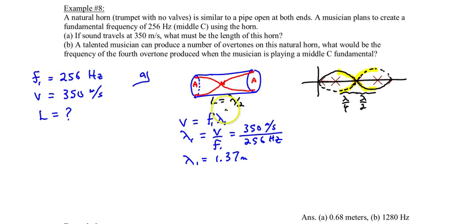And the next thing is we know that L must be equal to half of that because we see that from that pattern here. So 1.37 meters divided by 2 and that gives you a length of 0.68 meters. So he would have to adjust his length of his pipe, his horn, to be 0.68 meters, 68 centimeters.